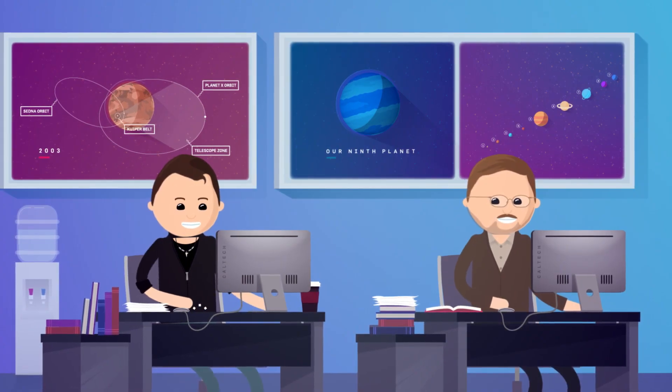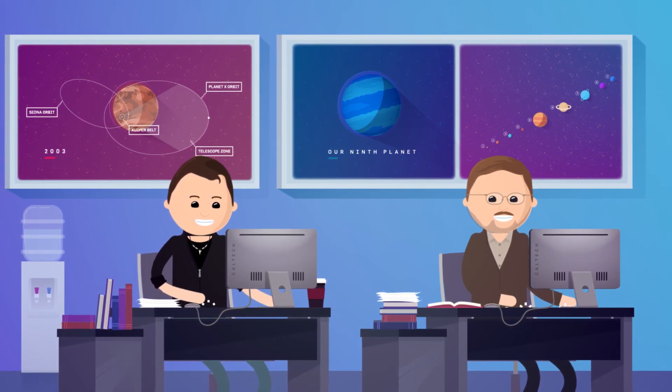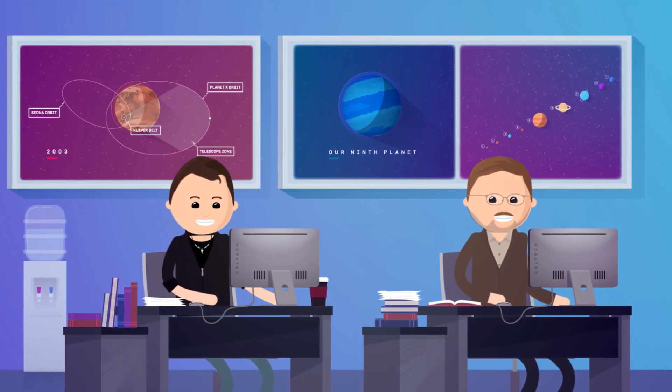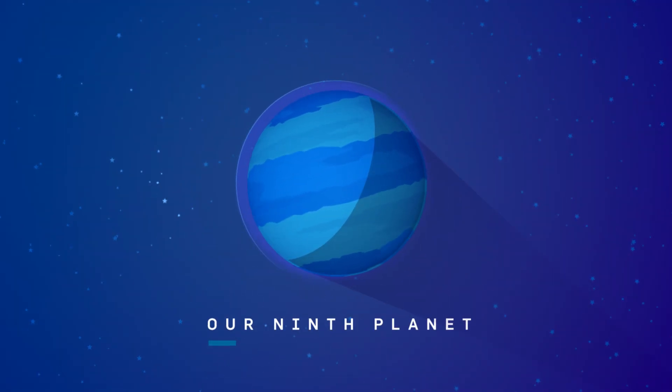Brown and Batygin estimate it could take between 5 and 15 years to find Planet X. And that's okay. They're on a mission to reclaim an original member of our solar system to find our true ninth planet.